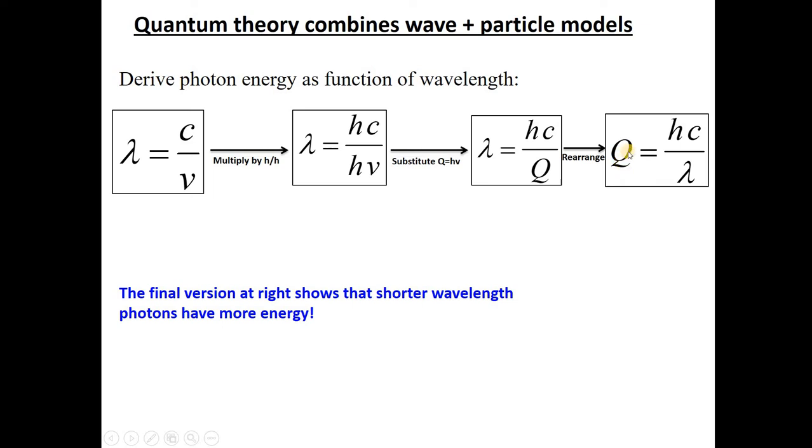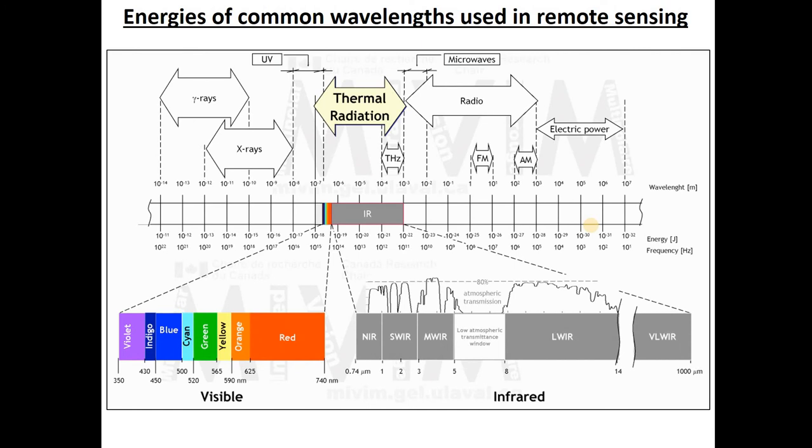And if we rearrange this we can write the energy of a photon as a function of its wavelength. So here we essentially combine the wave model and the particle model, and we directly show that photons with a longer wavelength are lower energy, and photons with a shorter wavelength are higher energy. They make Q bigger.